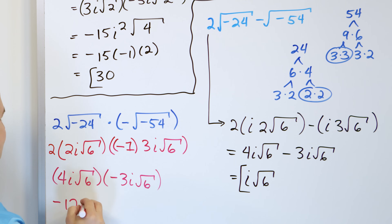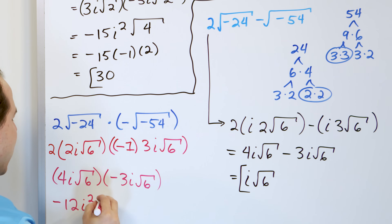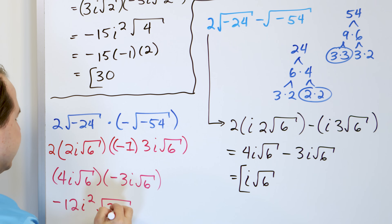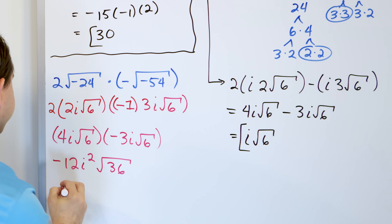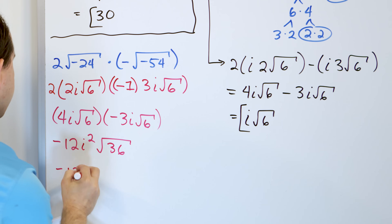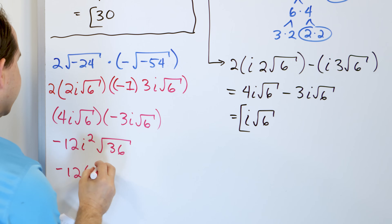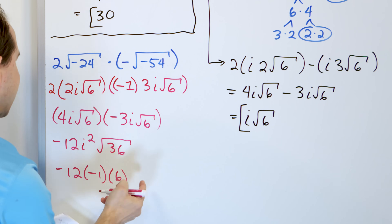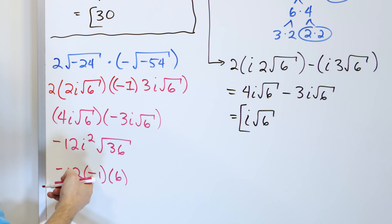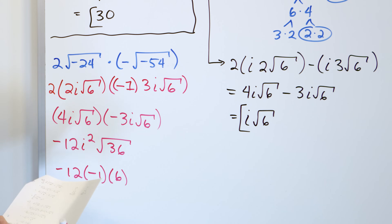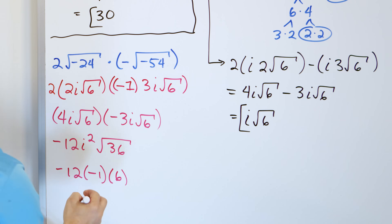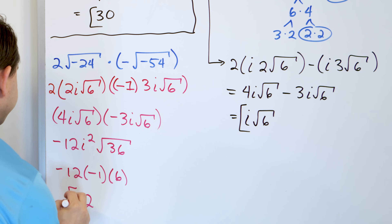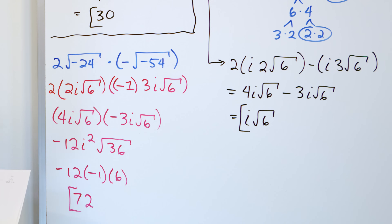We also have the square root of 6 times 6 which is root 36. So we have negative 12 times i squared times root 36. Since i squared equals negative 1 and root 36 is 6, we get negative 12 times negative 1 times 6. Negative times negative is positive, and 12 times 6 is 72. The final answer is positive 72.